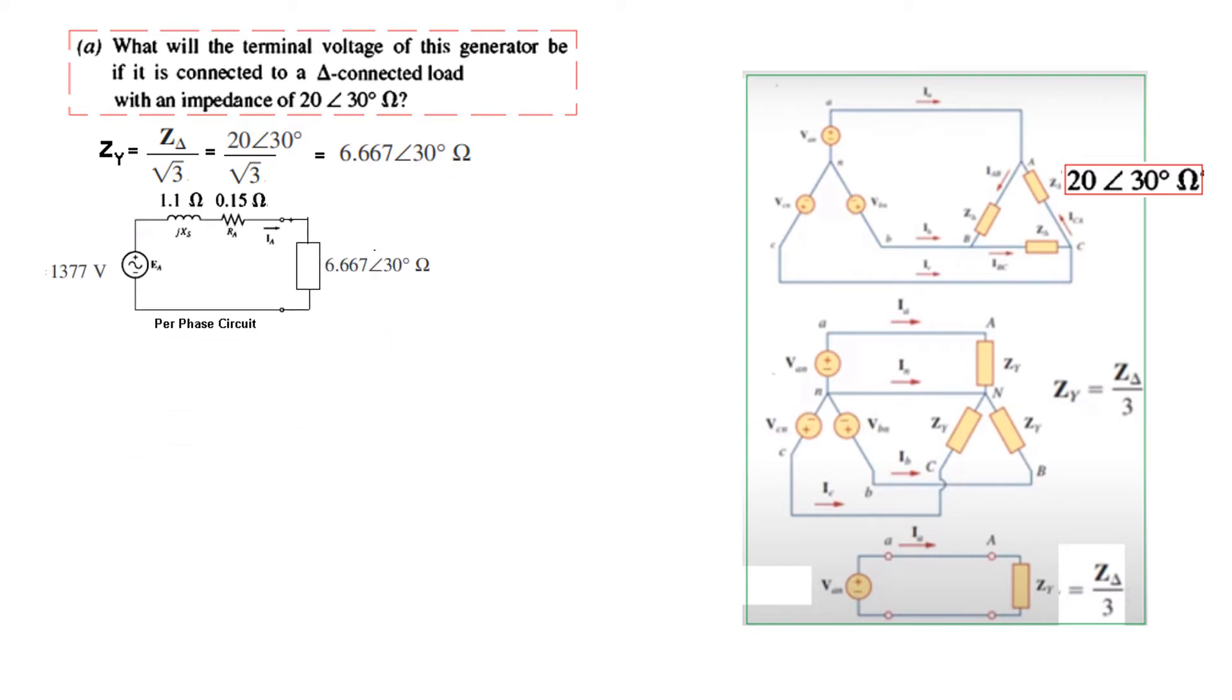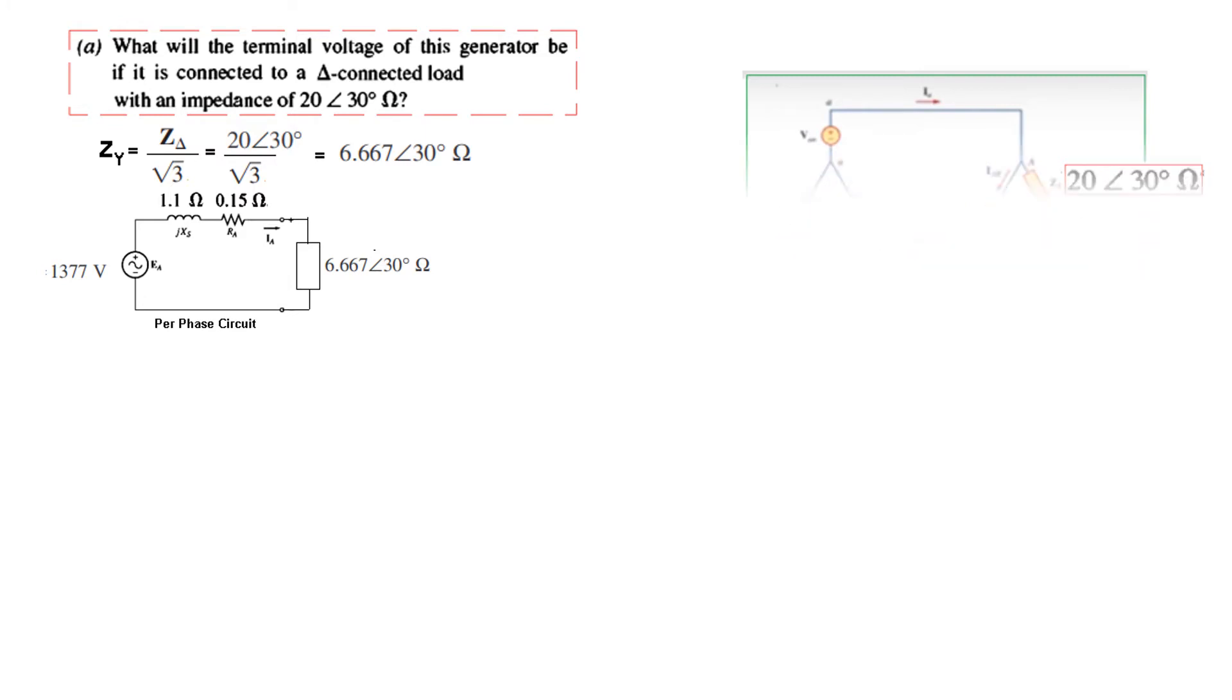From the circuit, we have the open circuit generated voltage Ea. We connect the load. The magnitude of the phase current and armature current is same. And since Ea is known, we will calculate the current Ia as follows.